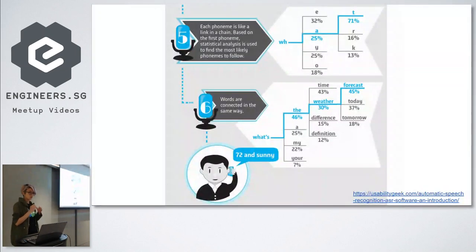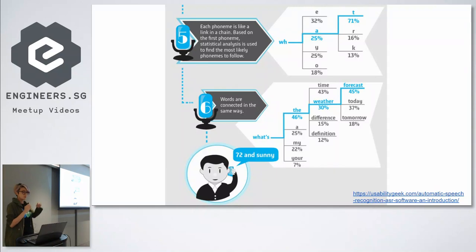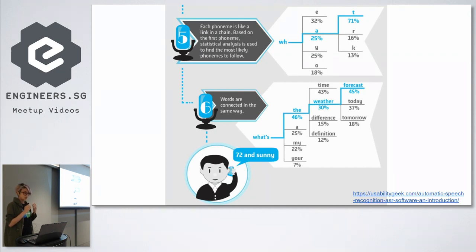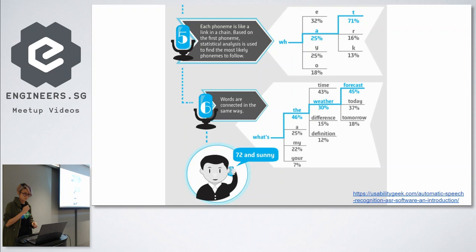Each phoneme is like a link in a chain — based on the first phoneme, analysis is used to find the most likely phonemes to follow. And similarly, words are connected in the same way.